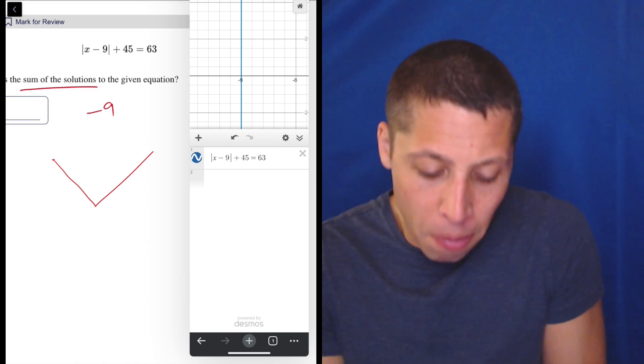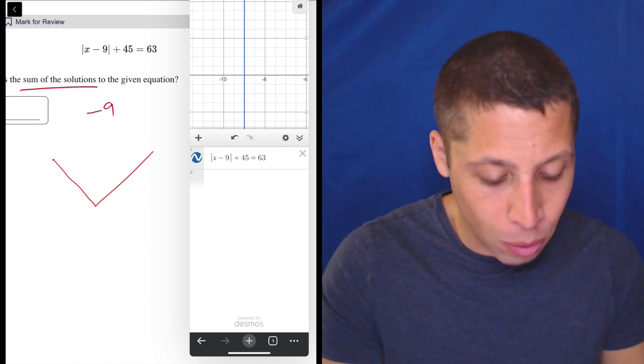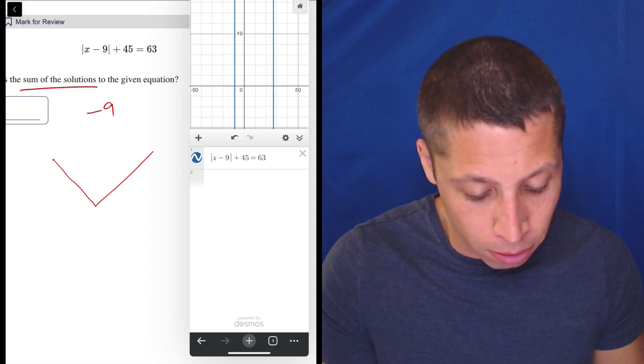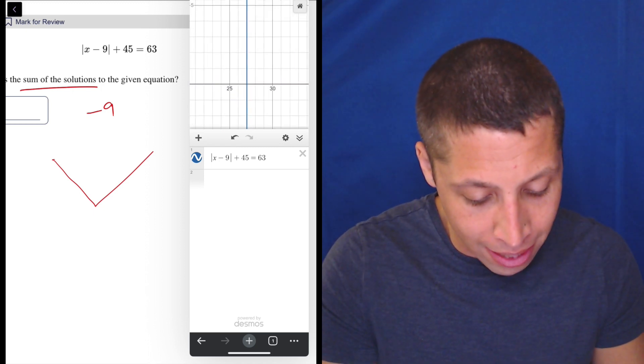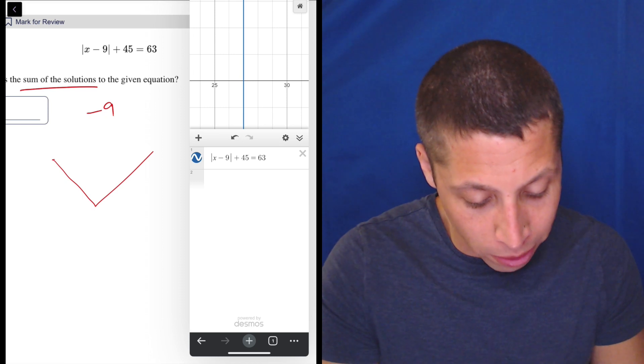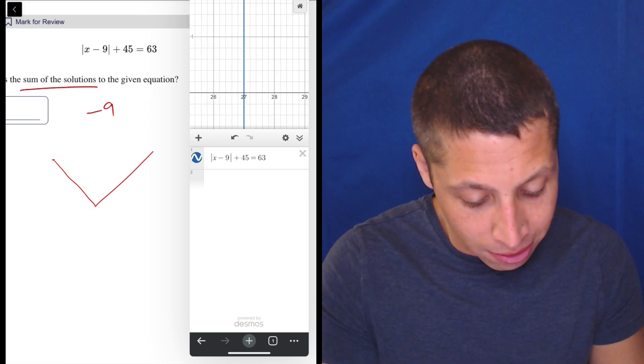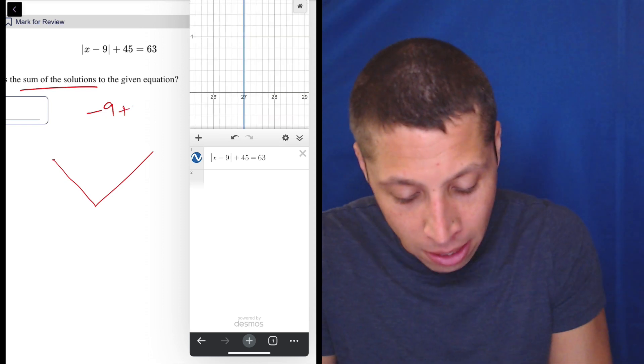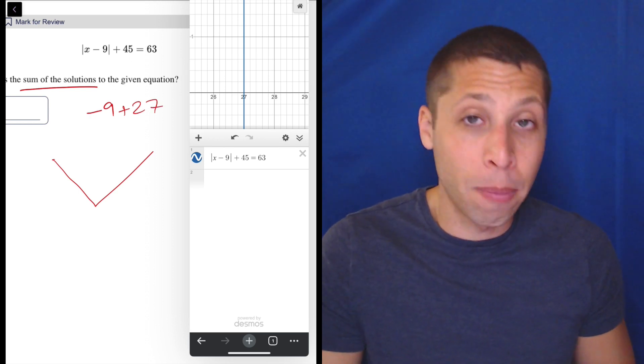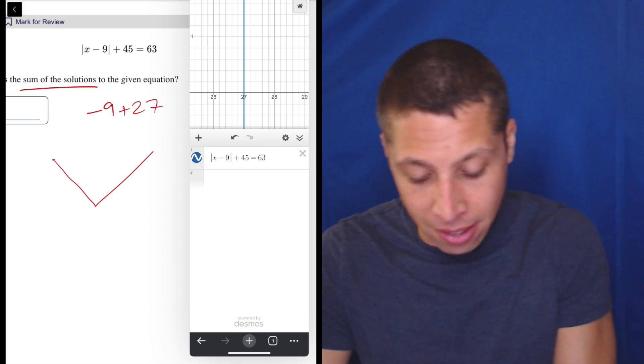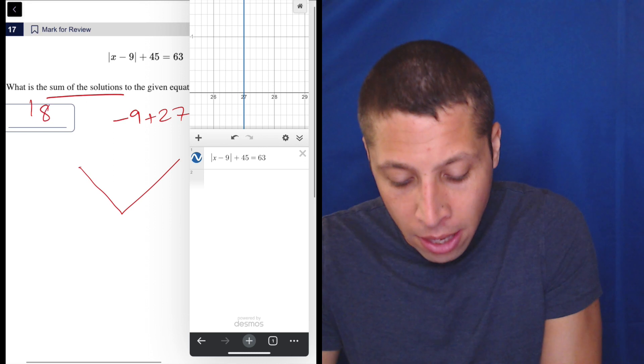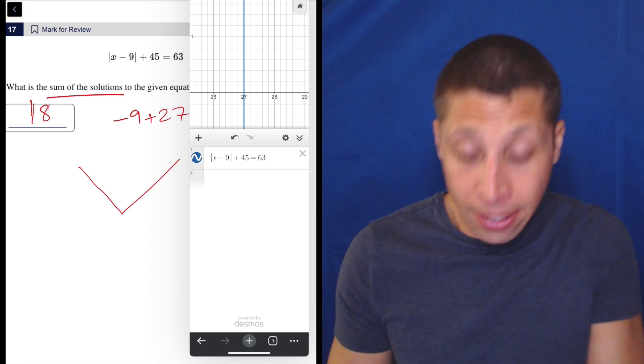But when it says sum of the solutions, we know there's going to be two. So we got to find the other. So let's zoom out, zoom out, and oh, there it is. So if I zoom into that, it's somewhere between 25 and 30, 26, okay, it's exactly at 27. So negative 9 plus 27 is the same as 27 minus 9. So that gives us our answer of 18. So that's it, 18 is the answer.